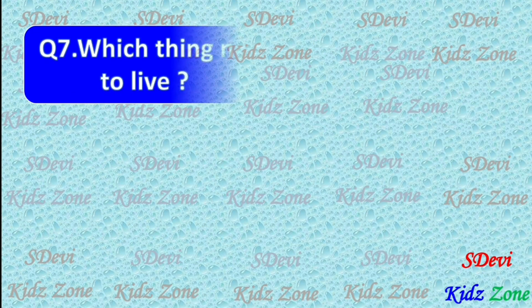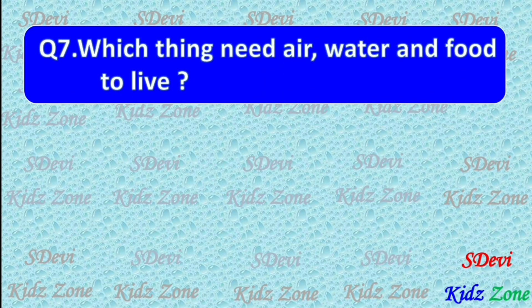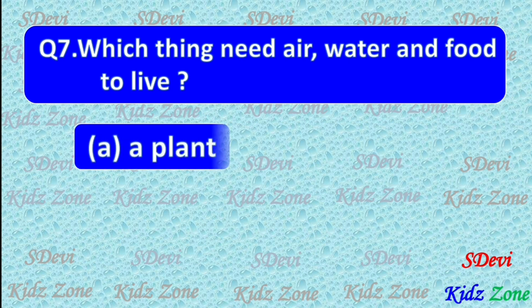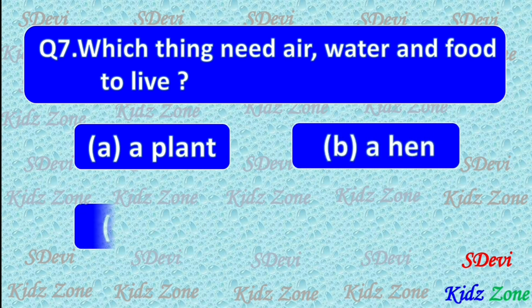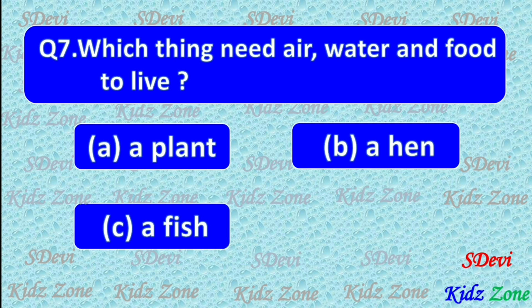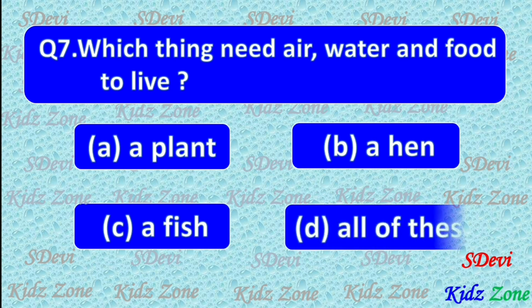Question number 7. Which thing needs air, water and food to live? A. A plant. B. A hen. C. A fish. D. All of these.